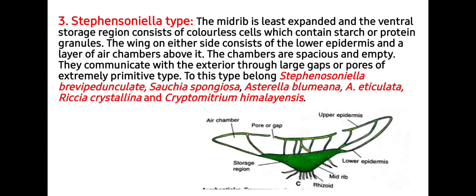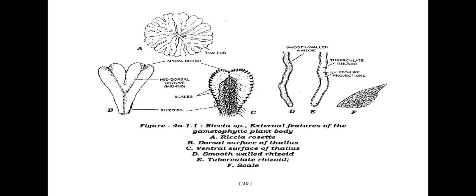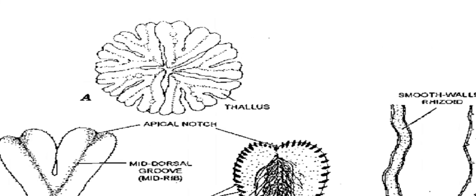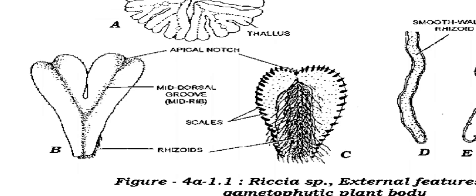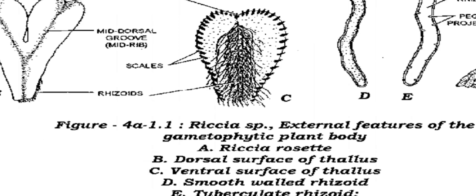To this category belong Stephanosomella, Brebbia pedunculata, Sauteria spongiosa, Astrella, Blumenia, Astrella reticulata, Riccia crystallina, and Cryptomitrium himalayense. You can see this type of thallus in dorsal view, where a rosette-like condition is present in Riccia, with an apical notch and a prominent midrib on the dorsal surface, while rhizoids and scales are present at the margins of the lobe.